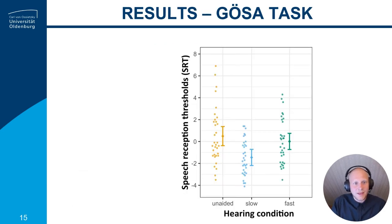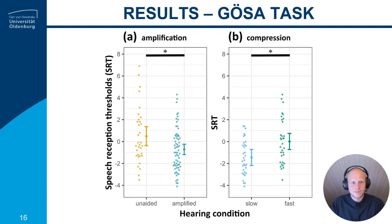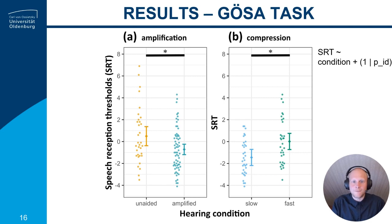We also did the same analysis for the Göttinger sentence test, where lower means better. Both effects are significant, but interestingly, even though we would expect shared underlying processing for both speech intelligibility and musical scene analysis within the same individuals, for music fast compression outperformed the slow approach, while it is the other way around in the speech domain.